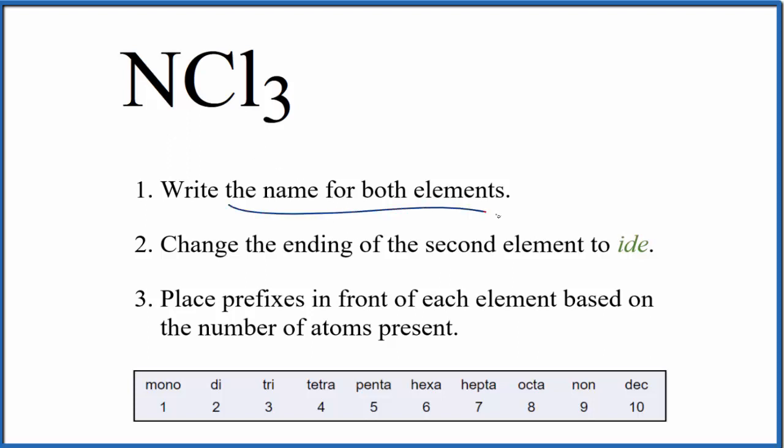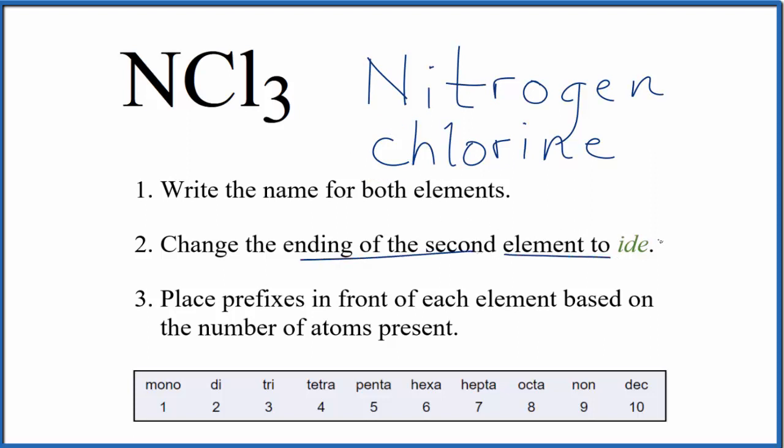First, we write the name for both elements, and note the second name starts with a lowercase letter. Then we change the ending on the second element to 'ide'. So we cross out 'ine' and we write 'ide'.